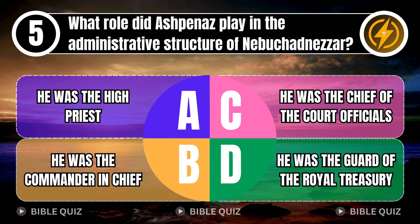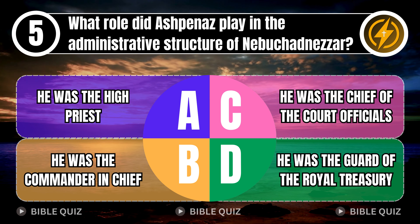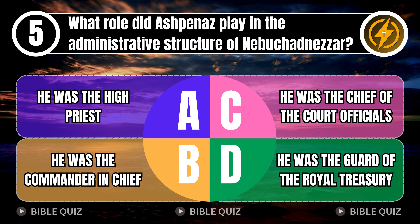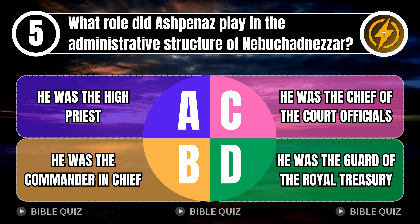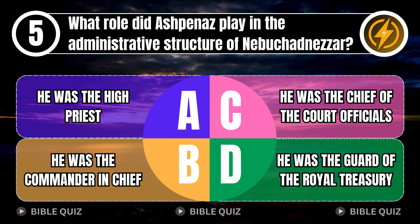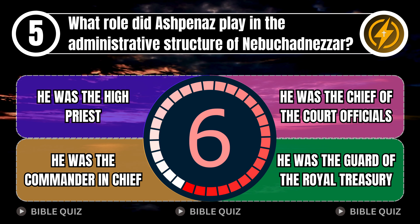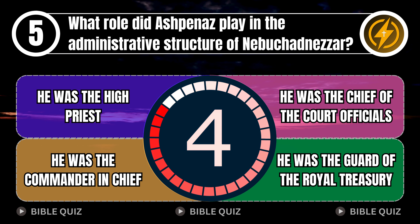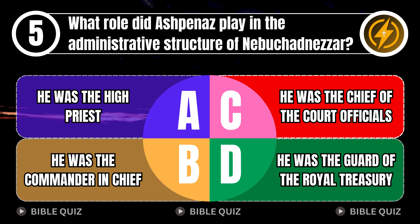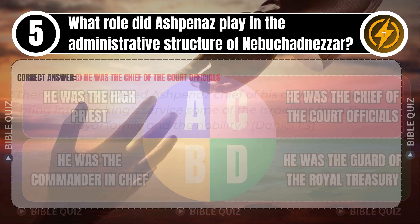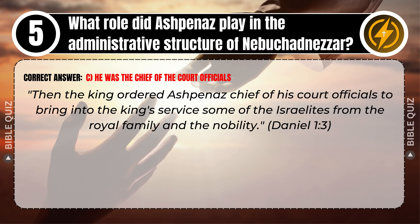Question 5: What role did Ashpenaz play in the administrative structure of Nebuchadnezzar? A. He was the high priest. B. He was the commander-in-chief. C. He was the chief of the court officials. D. He was the guard of the royal treasury. Correct answer: C. He was the chief of the court officials. Explaining the Bible — then the king ordered Ashpenaz, chief of his court officials, to bring into the king's service some of the Israelites from the royal family and the nobility. Daniel 1 verse 3.